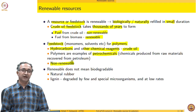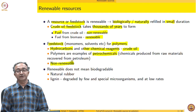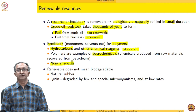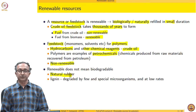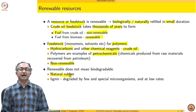Just to carry forward with the definition: renewable does not always imply biodegradability. For example, natural rubber is produced by trees, but it is not as easily biodegradable. Of course, in all of these things, you have already noticed that I am talking in qualitative features.